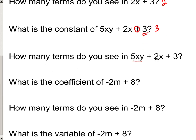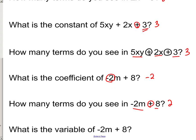Yeah, that's good. See how we use the plus signs to break it up there? What's the coefficient of -2n + 8? See this negative sign in front of it? That means my coefficient is negative 2, not just 2, but we've got to include that sign. How many terms do you see in -2m + 8? I see 2. And what's the variable of -2m + 8? Well, that's an m.